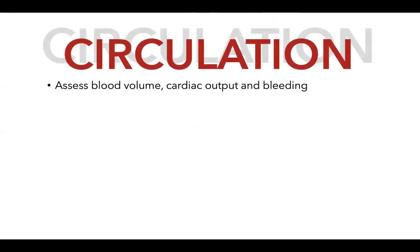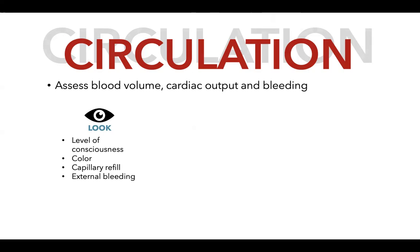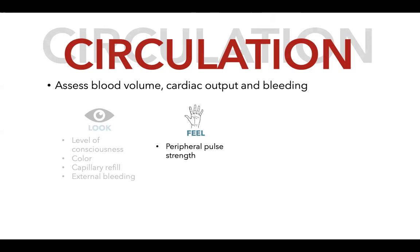Next letter is Circulation. Assess blood volume and cardiac output and look for signs of hemorrhagic shock. Check level of consciousness (decreased due to hypoxia from blood loss), skin color (pallor), capillary refill time (prolonged in hemorrhagic shock), signs of external bleeding, peripheral pulse strength (should be strong and equal bilaterally), pulse rate, and blood pressure.